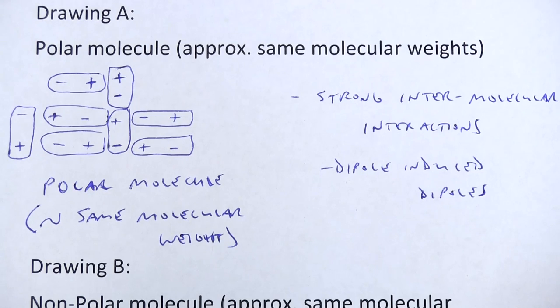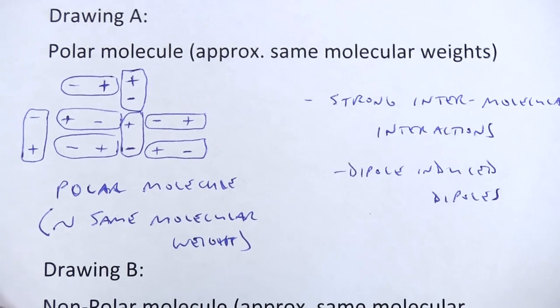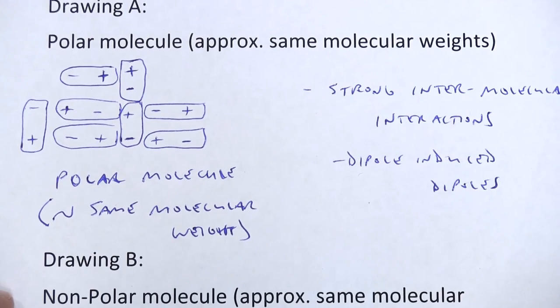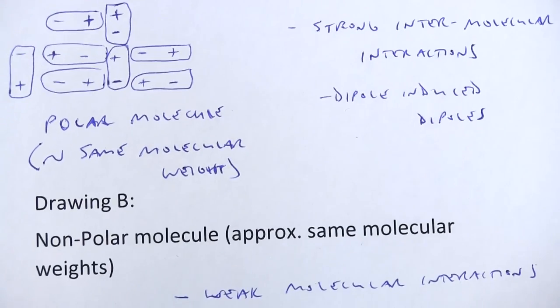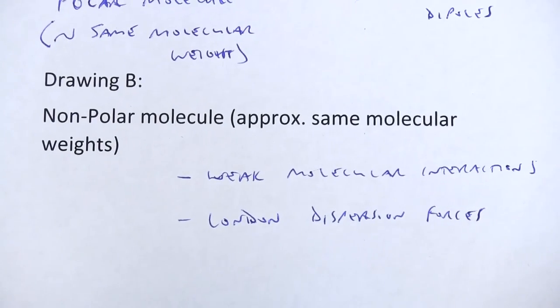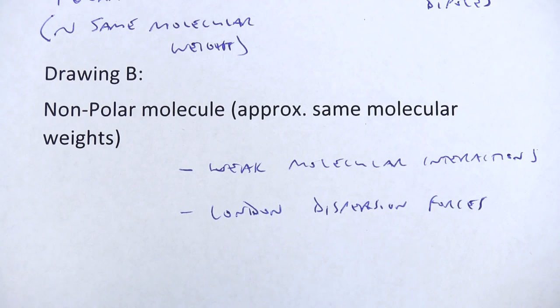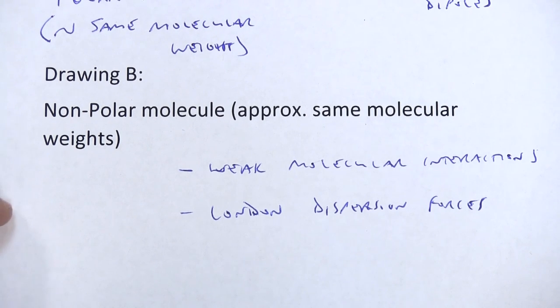Okay, so let's look at one final example of a great answer. This is a six out of six again, and in fact, the professor really loved this one, so this is a good one to look at. It was accompanied by two drawings a student did. The first drawing, the student had written polar molecule, approximately the same molecular weights, and they had the positives and negatives lined up as you can see them there. And then the student comments off to the side were strong intermolecular interactions and dipole-induced dipoles. And then drawing B, which I wasn't able to recreate, the student had said non-polar molecule, again, approximately the same molecular weights. And the student points were weak molecular interactions and London dispersion forces.